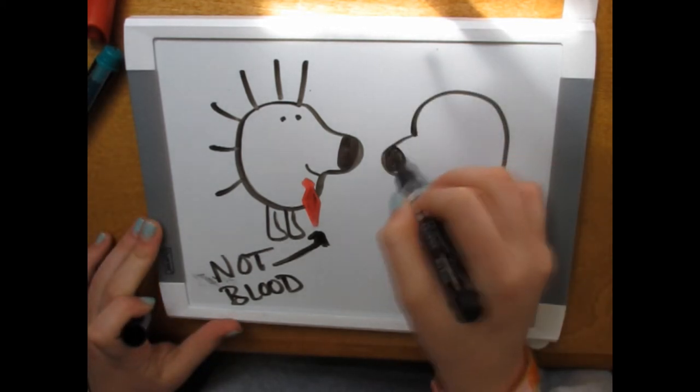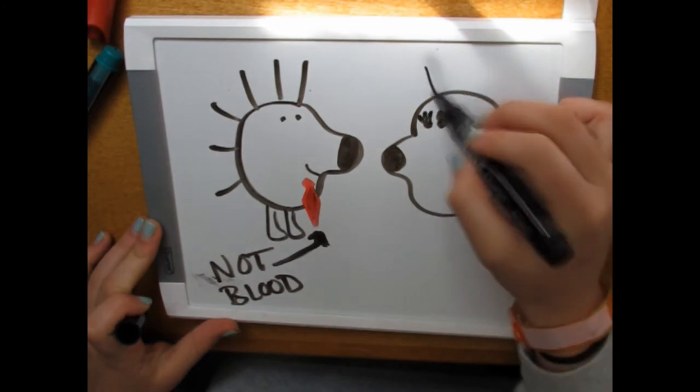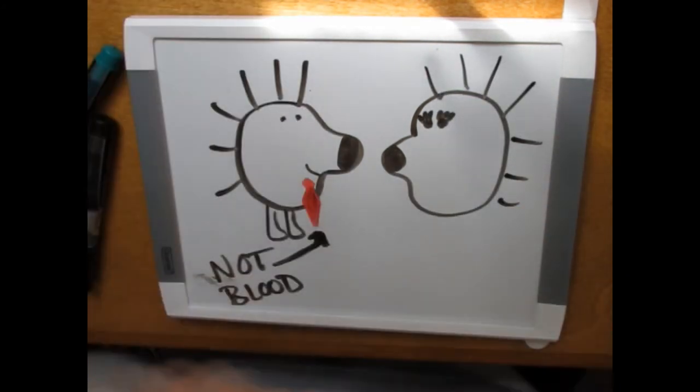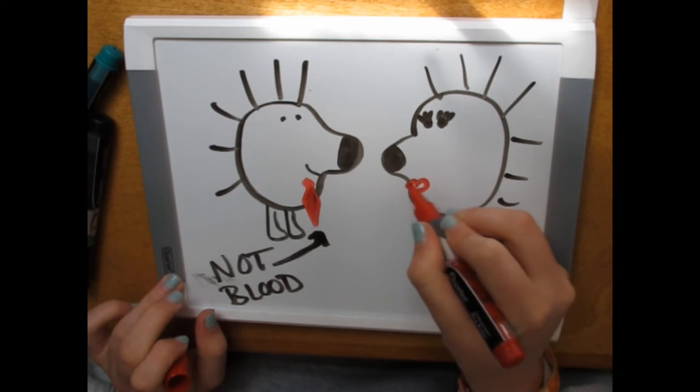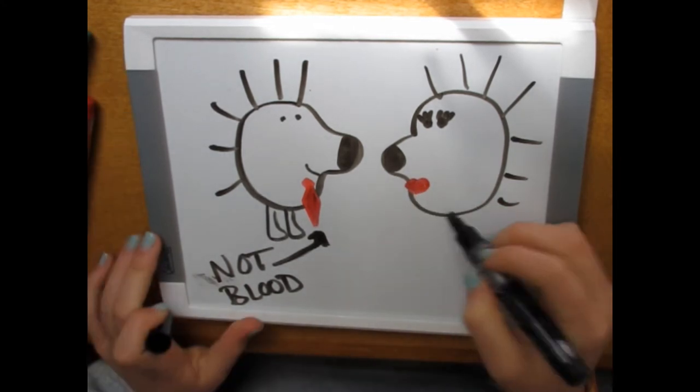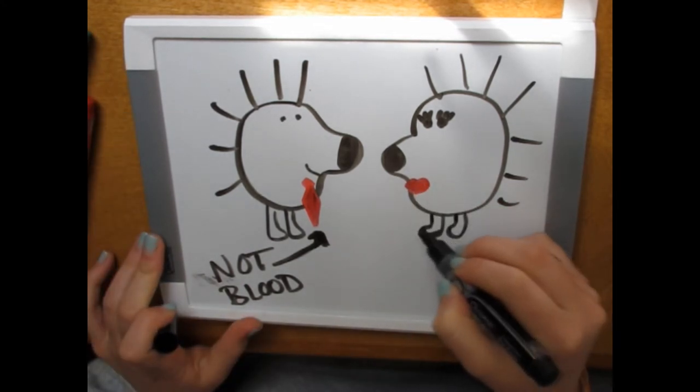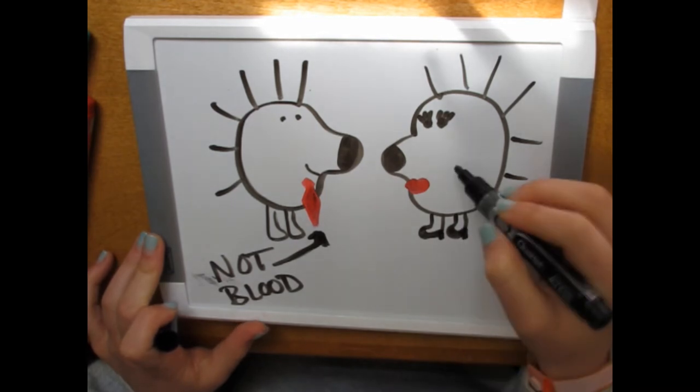And no, the porcupine dad did not get stabbed in the jugular, that is a tie. As I was drawing this I quickly began to realize that daddy porcupine had married a drag queen but at least she had nice shoes.